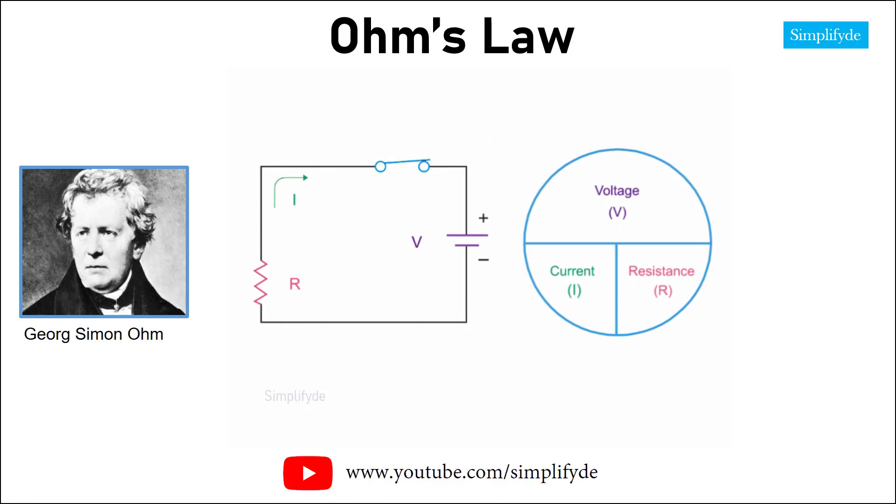If you want to solve for voltage, then you multiply current and resistance. If you want to solve for resistance, then you divide voltage by the current. If you want to solve for current, then you divide voltage by the resistance.